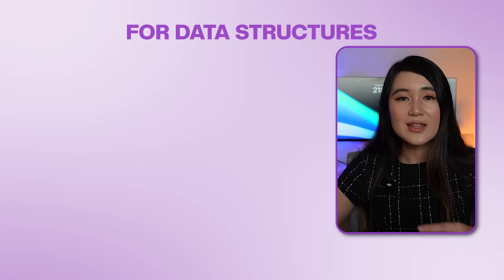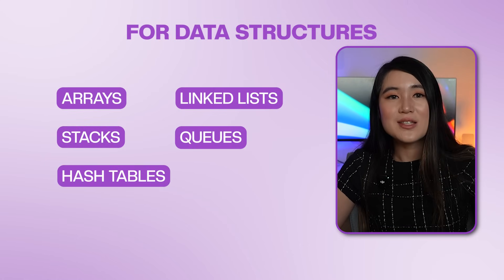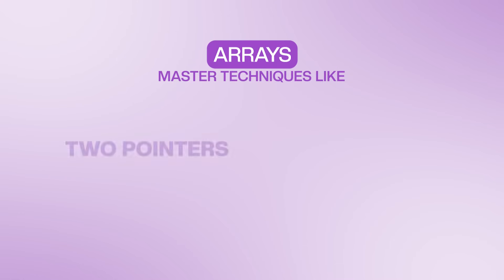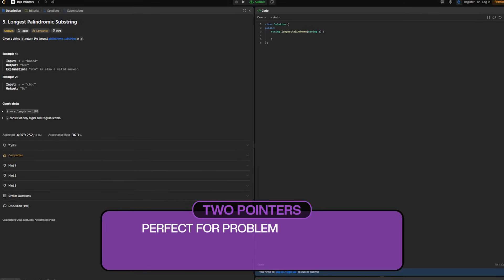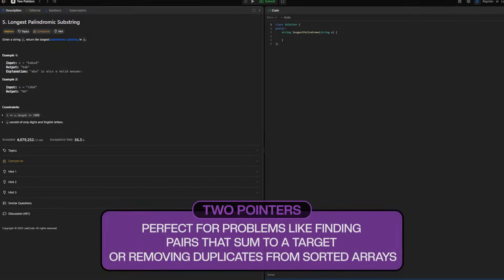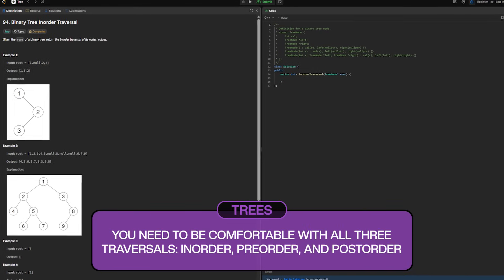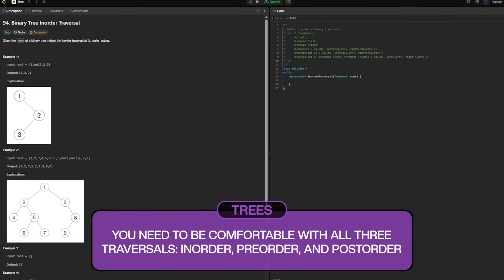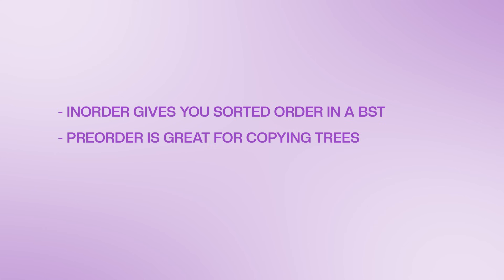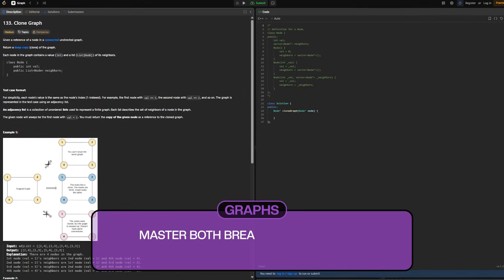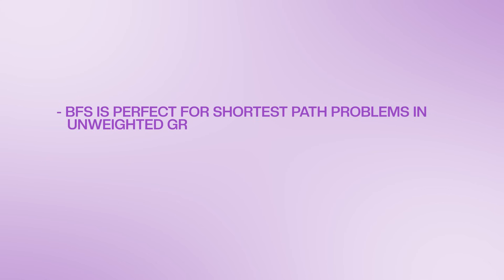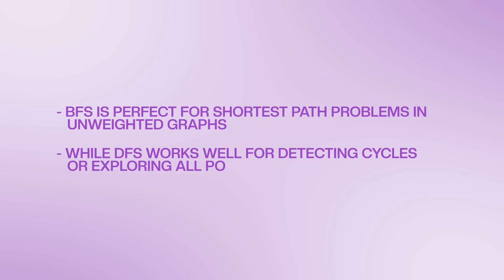Let me be specific about what core data structures and algorithms you actually need to master. For data structures, focus on these core ones first: arrays, linked lists, stacks, queues, hash tables, and binary trees — these are your foundation. For arrays, master techniques like two-pointer and sliding window. Two-pointer is perfect for problems like finding pairs that sum to a target or removing duplicates from sorted arrays. Sliding window helps with substring problems or finding maximum sums in subarrays. For trees, you need to be comfortable with all three traversals: in-order, pre-order, and post-order. In-order gives you sorted order for BSTs, pre-order is great for copying trees, and post-order works well for bottom-up calculations. For graphs, master both BFS and DFS. BFS is perfect for shortest path problems in unweighted graphs, while DFS works well for detecting cycles or exploring all possible paths. Don't worry about advanced structures like tries or segment trees until you've nailed these basics. Most interview problems can be solved with these fundamental building blocks.